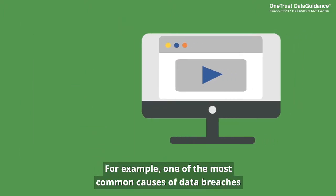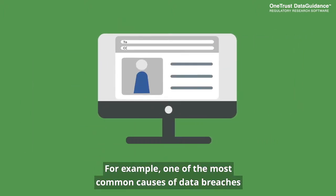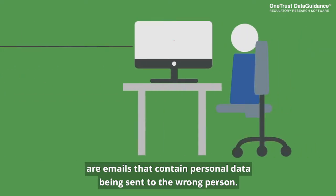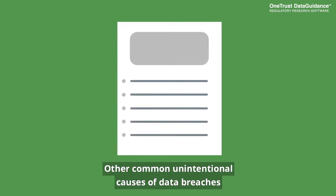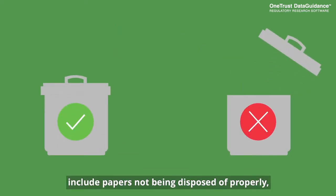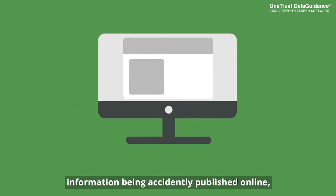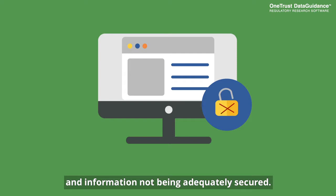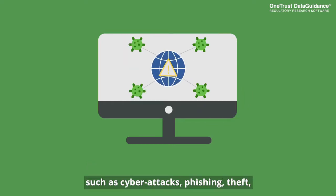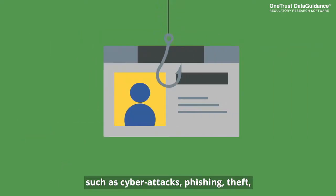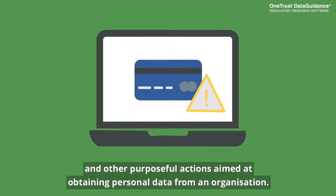For example, one of the most common causes of data breaches are emails that contain personal data being sent to the wrong person. Other common unintentional causes include papers not being disposed of properly, information being accidentally published online, and information not being adequately secured. Data breaches can also occur due to intentional and malicious actions such as cyber attacks, phishing, theft, and other purposeful actions aimed at obtaining personal data from an organization.